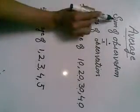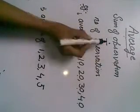Average. Average is sum of observations divided by number of observations.